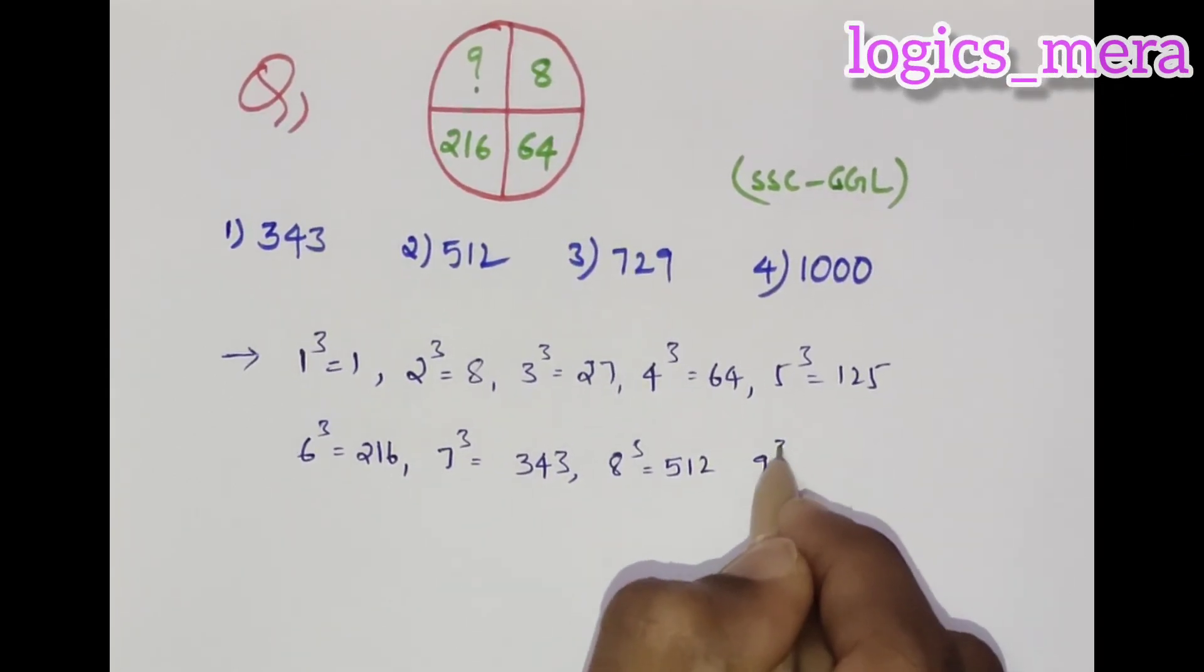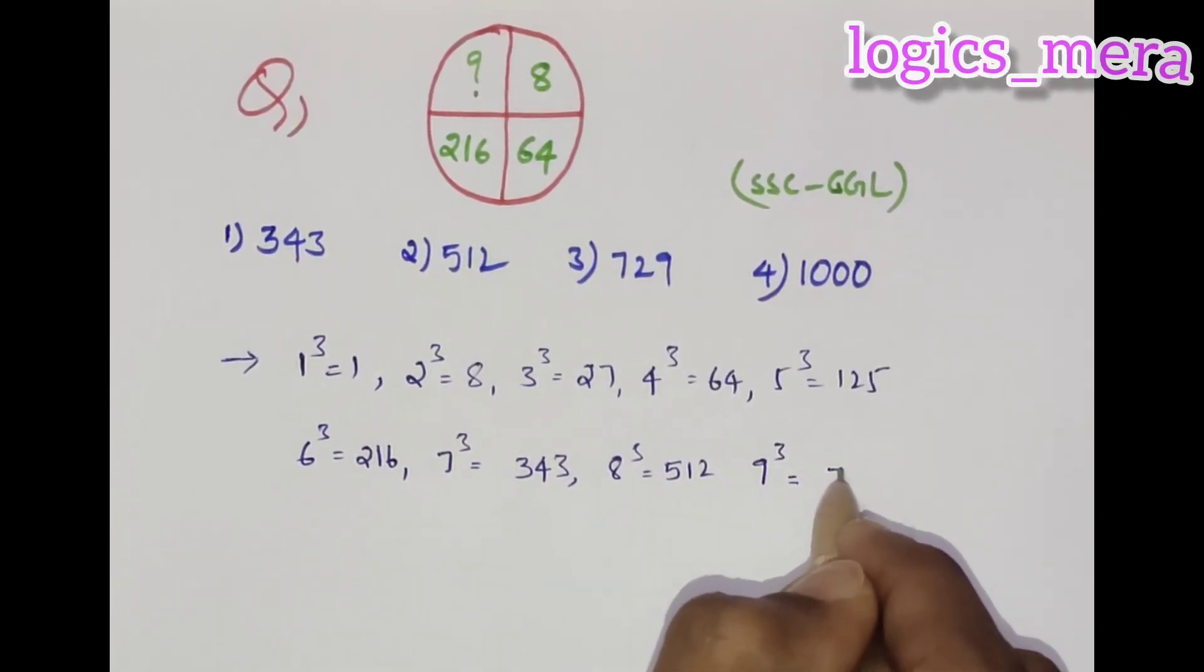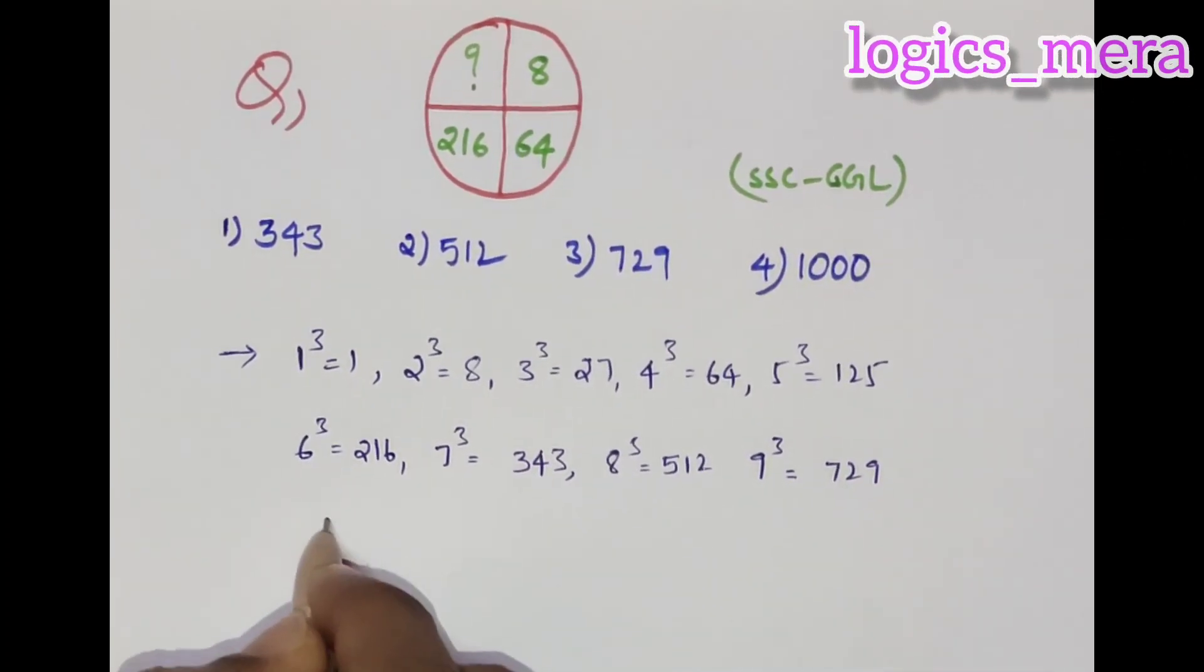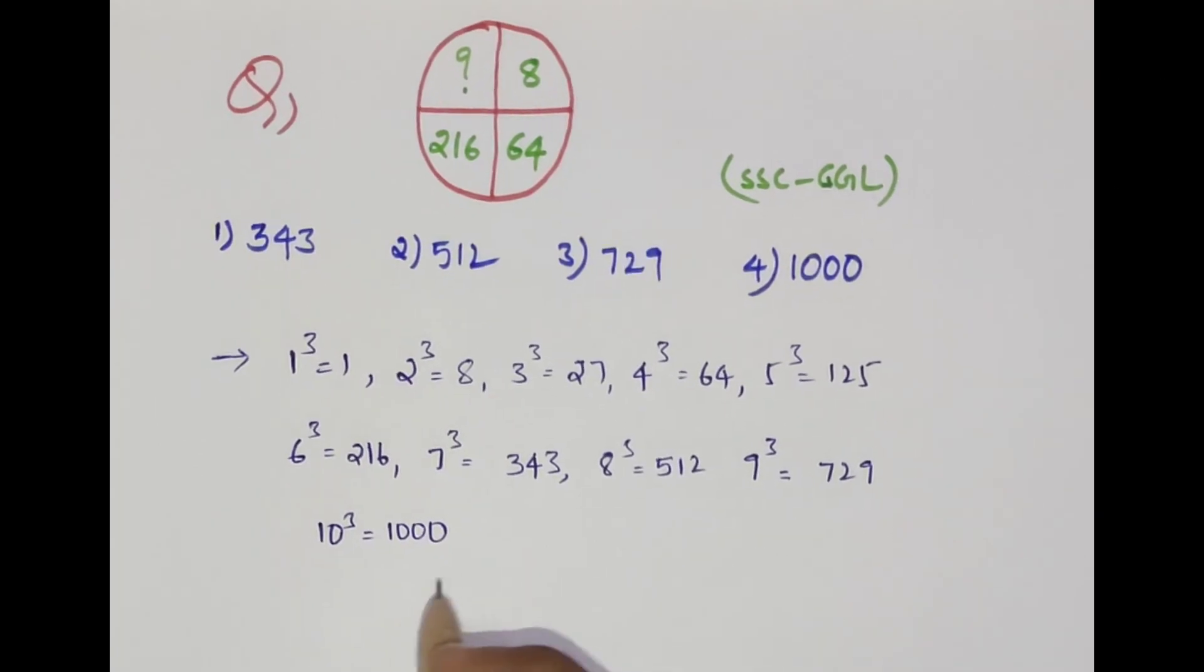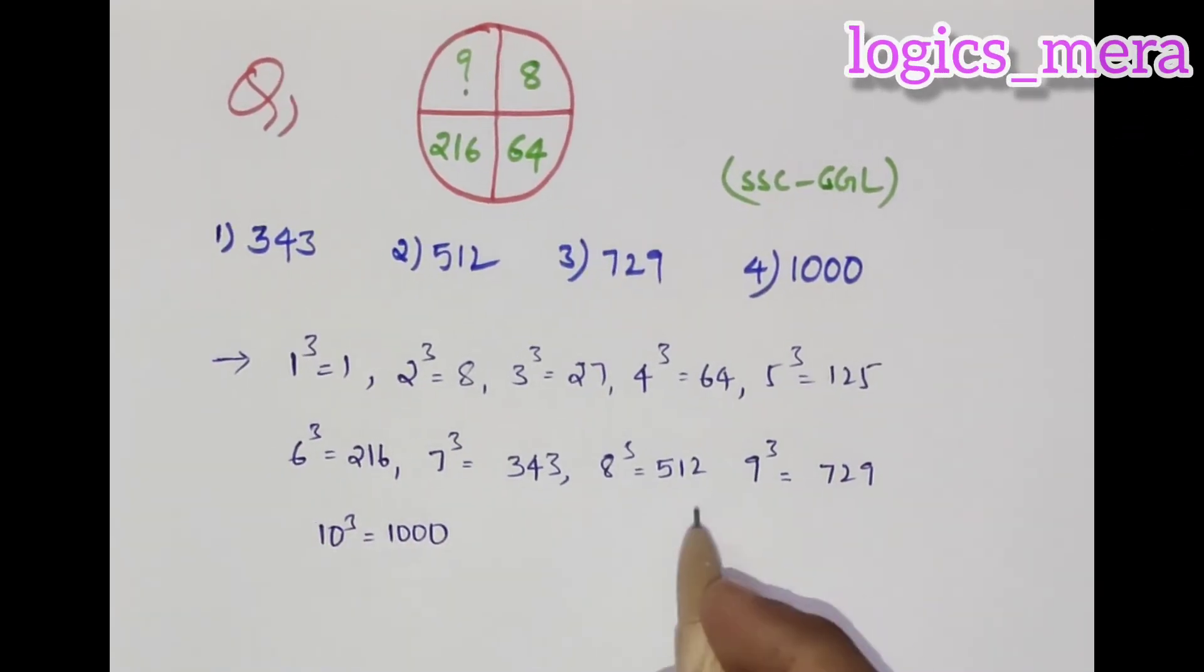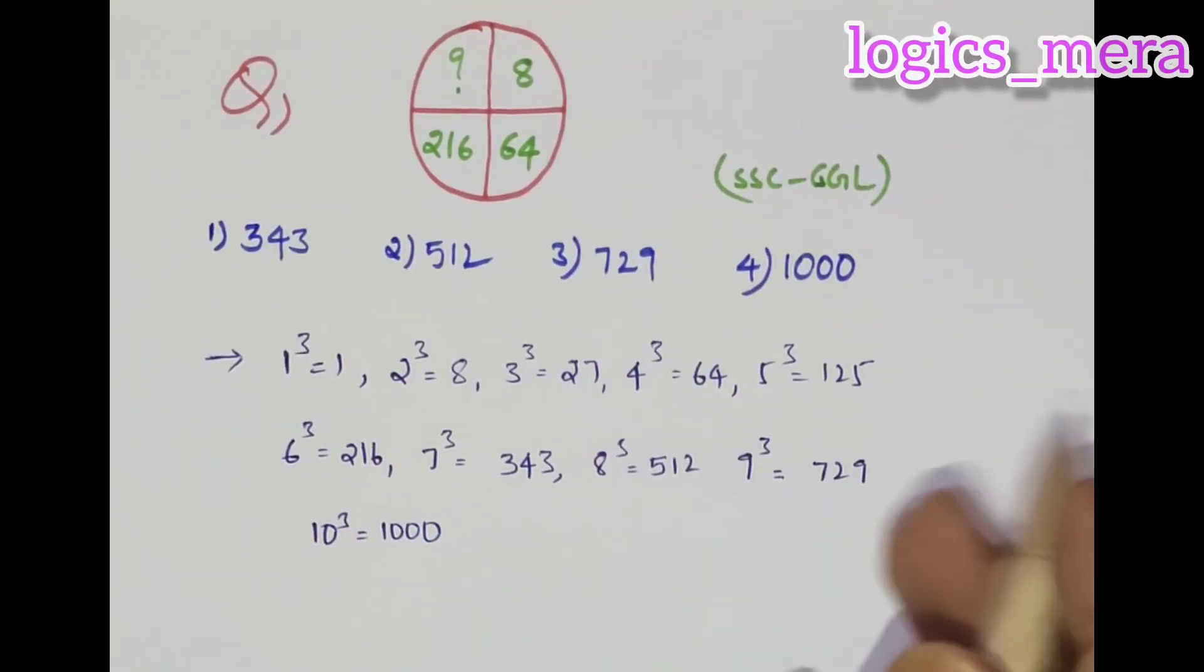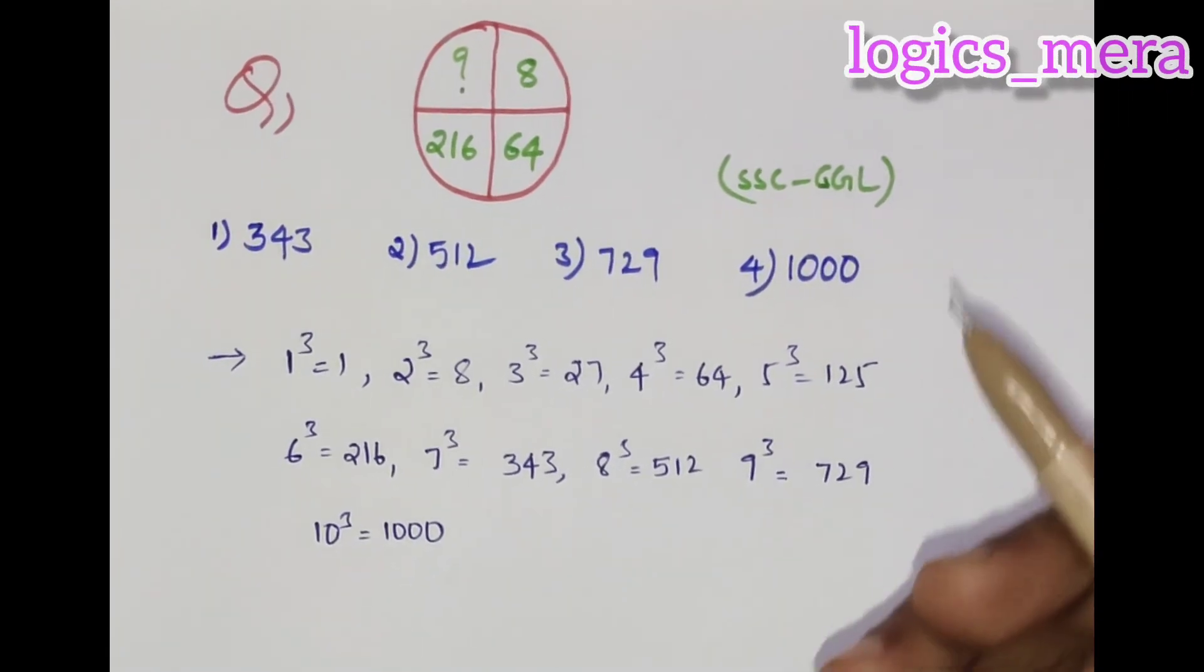Nine cube is seven hundred and twenty-nine, and finally, ten cube is one thousand. If you know the cubes of first ten natural numbers, then your answer will be done within ten seconds.